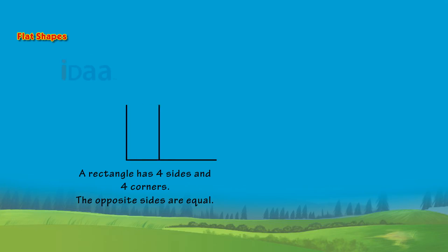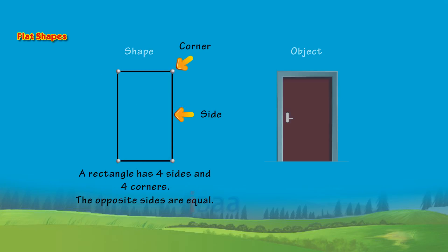Rectangle. A rectangle has four sides and four corners, and the opposite sides are equal. For example, a door.